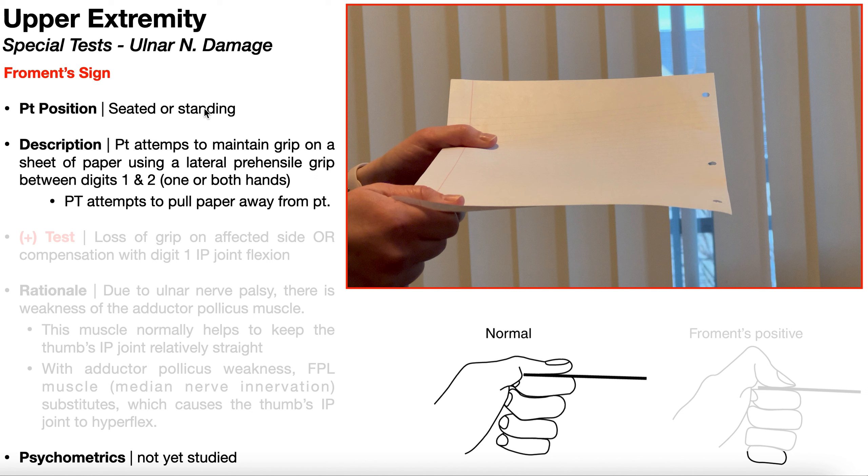I'm first going to show you what a negative test looks like, and then we'll look at a positive test. The starting patient position is either going to be seated or standing, and what's important here is that the patient's going to be gripping a sheet of paper using what's called a lateral prehensile grip. Down here, you can see this lateral prehensile grip, and you may not realize it, but most people actually use this grip when holding a key, trying to put the key into a lock, whether it's getting into your house, your apartment, even your car.